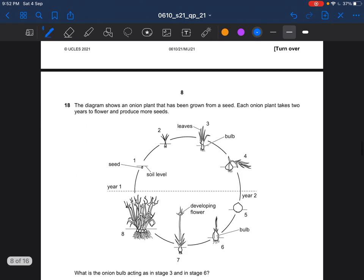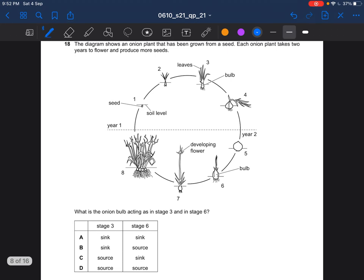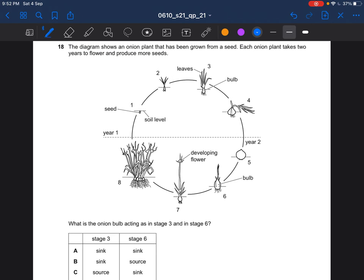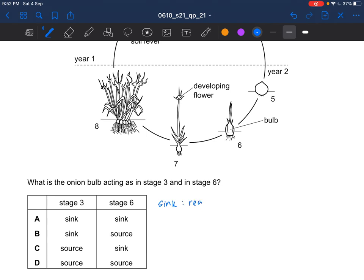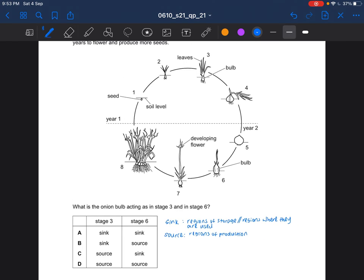Next question. The diagram shows an onion plant that has been grown from a seed. Each onion plant takes 2 years to flower and produce more seeds. What is the onion plant acting as in stage 3 and in stage 6? A sink is the regions of storage or the regions where they are used. Then source is the regions of production. 3 would be the sink. And 6 would be the source, the regions of production. And then hence you have the flower. So the answer would be B.